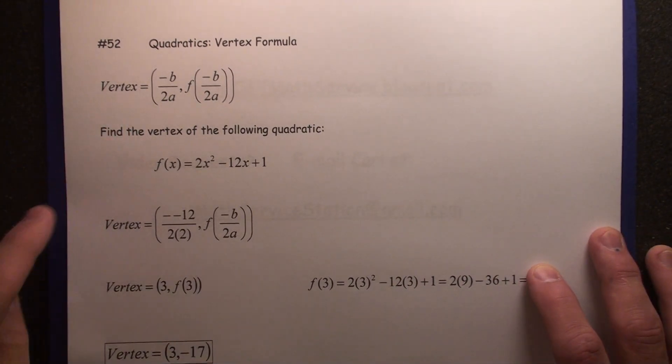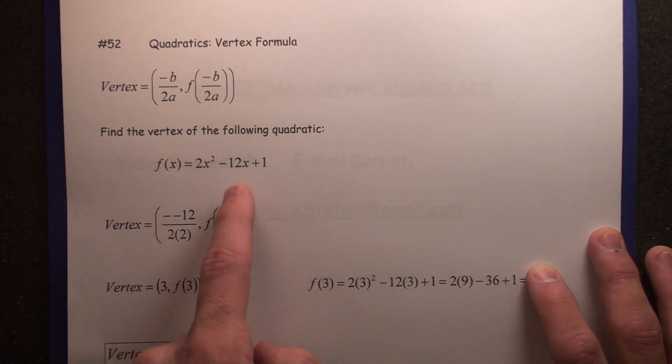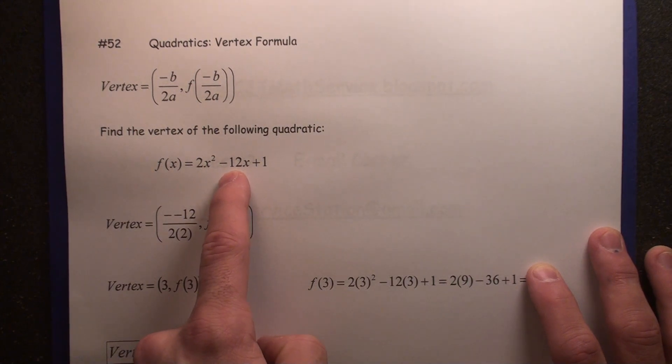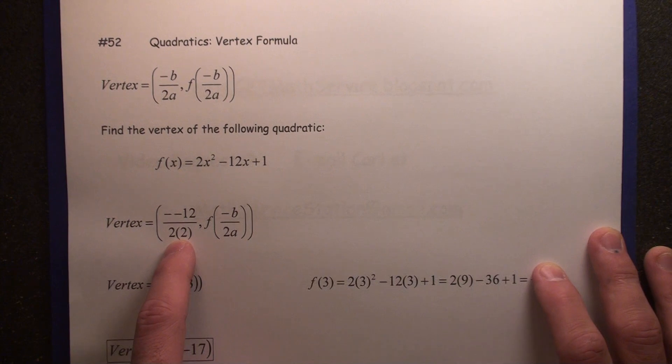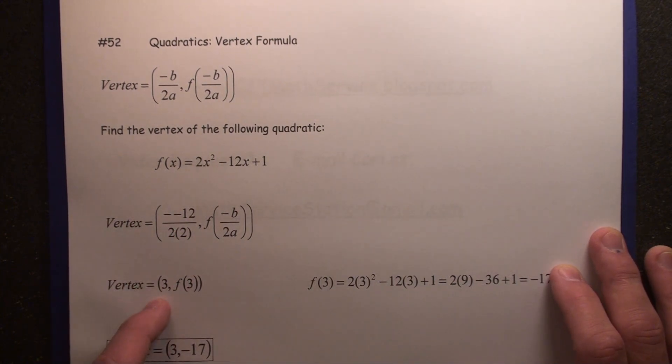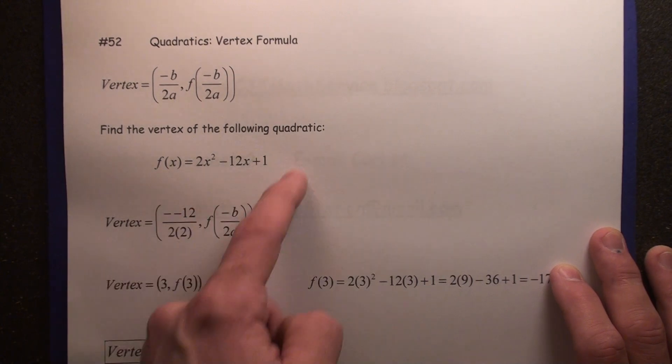So therefore, we're going to take negative b over 2a. We're going to take negative of negative 12, that's going to give us positive 12 over 4, which is 3. That's the x value of the vertex of this equation.